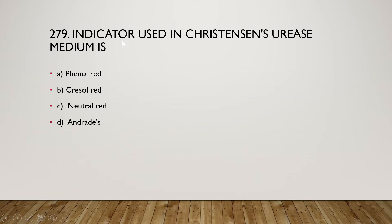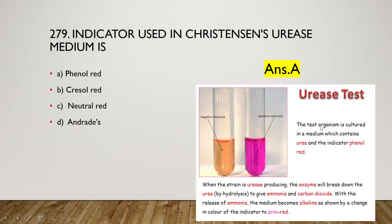The next question is: the indicator used in Christensen's urea medium is (A) phenol red, (B) cresol red, (C) neutral red, or (D) endo red. The right answer is option A — phenol red. In the urea test, the organism is cultured in a medium containing urea and phenol red. If the strain is urease-producing, the enzyme breaks down urea by hydrolysis to give ammonia and CO2, making the medium alkaline and changing the indicator to a pink-red color.